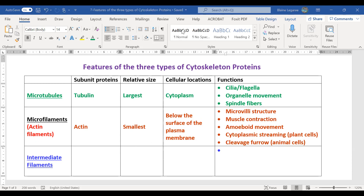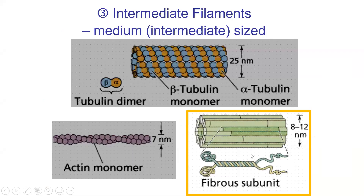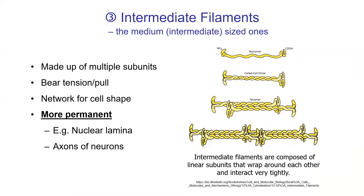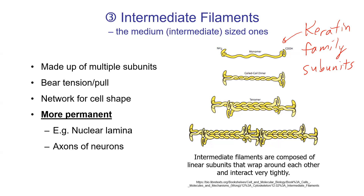The last cytoskeletal component is intermediate filaments. They are intermediate in size: microtubules are 25 nanometers, actin filaments are 7 nanometers, and intermediate filaments are 8 to 12 nanometers — truly in the middle. They are made of various subunits from the keratin family. Keratin is found in your skin and all over your body. These tend to be more permanent structural proteins that hold the shape of cells.